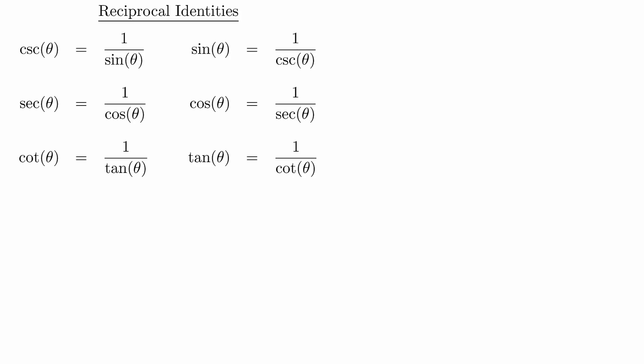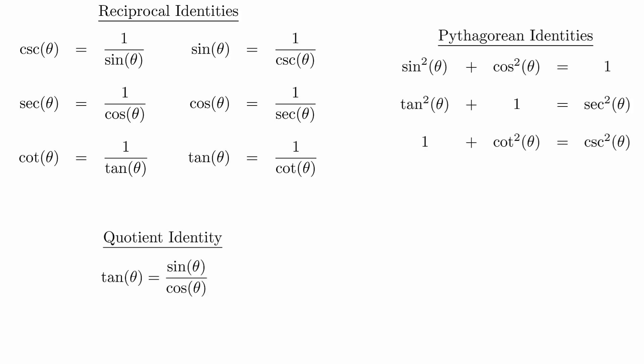In order to do this, we need to remember our reciprocal identities, the quotient identity, and the Pythagorean identities. We also need to remember the signs of the functions based on the quadrant that the angle is in.